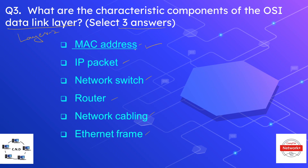The data link layer components include MAC address — it belongs to layer two. Network switch works at layer two, and ethernet frame is the data unit at layer two. While the router is a layer three device, IP packet is also a layer three concept, and network cabling works at layer one.